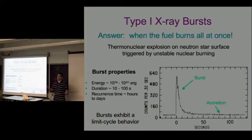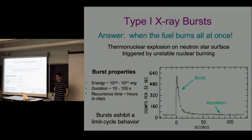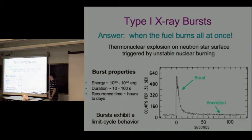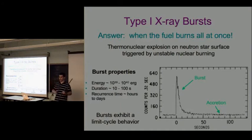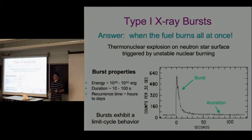The answer is when nuclear burning happens not in steady state but all at once. This burning that occurs almost all at once is what we call a Type I X-ray burst - a thermonuclear explosion on the surface of an accreting neutron star triggered by thermally unstable nuclear burning. A typical light curve shows the intensity released by accretion, then the start of the burst characterized by a very fast rise of maybe a second or so where a lot of nuclear burning occurs, followed by a decay lasting a few seconds to a minute.